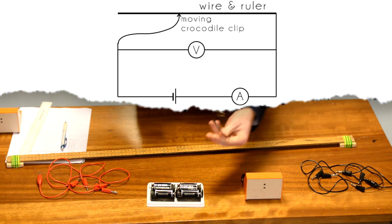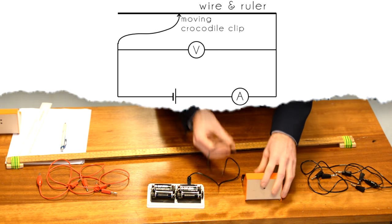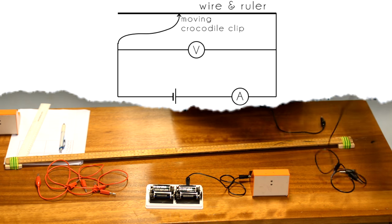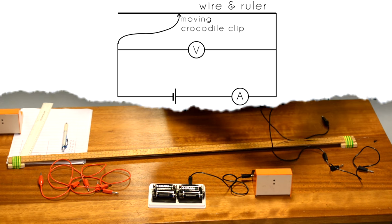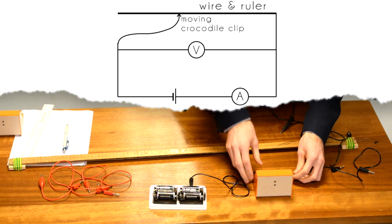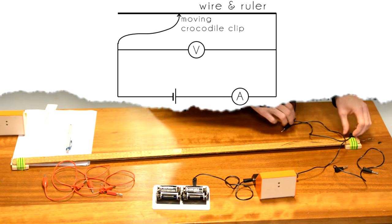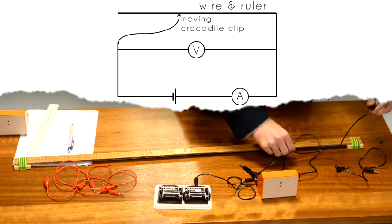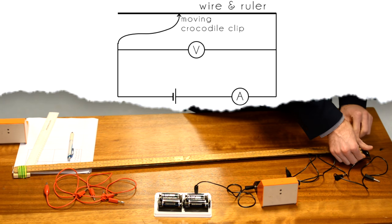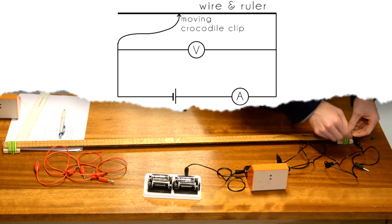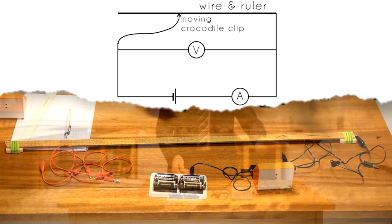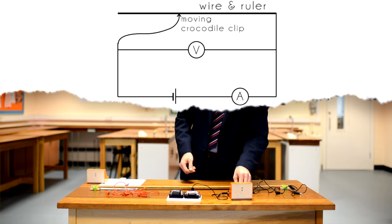So first connection battery to ammeter and then I'm going to connect the ammeter to one end of the resistance wire. Now to do this I'm going to use a double length cable so that I've got plenty of reach. I'm going to just clip on the crocodile clip at the end on the zero of the meter ruler and that crocodile clip will stay there then for the entire experiment.